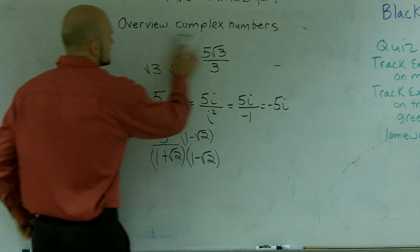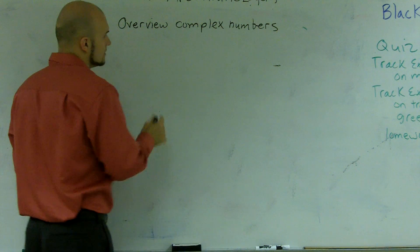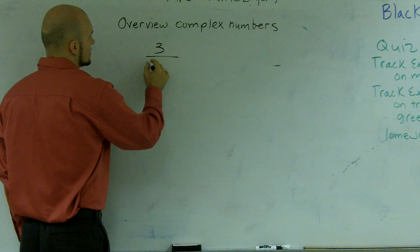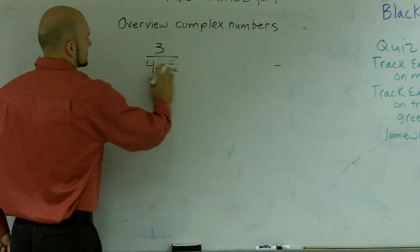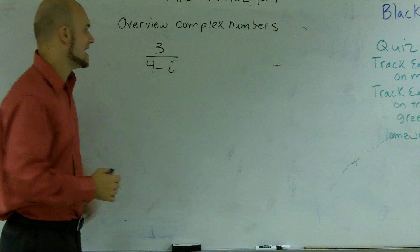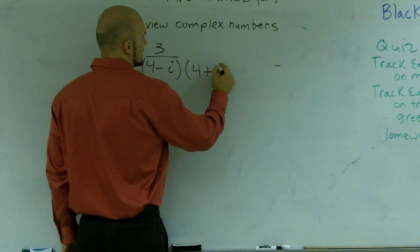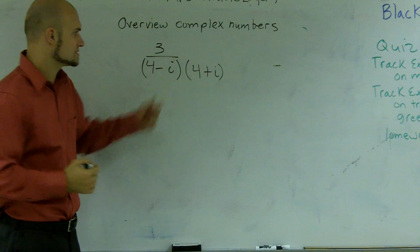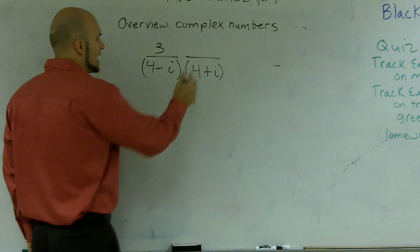And the reason why we do that is because this would give us the difference in two squares. Well, when we're dealing with the radical, let's say 3 over 4 minus i. And I need to get rid of this i. I'm going to have to multiply by the conjugate. And there's something that's really helpful. When you have conjugate pairs, that eliminates your i. And I'll show you how.